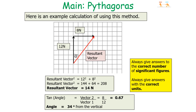Here's a worked example: vector 1 is 12 newtons and vector 2 is 8 newtons. The resultant vector squared equals 12² + 8² = 208, so the resultant vector is √208 ≈ 14 newtons. The angle is found from tan θ = 8 ÷ 12 = 0.67, giving θ = 34 degrees from the vertical.